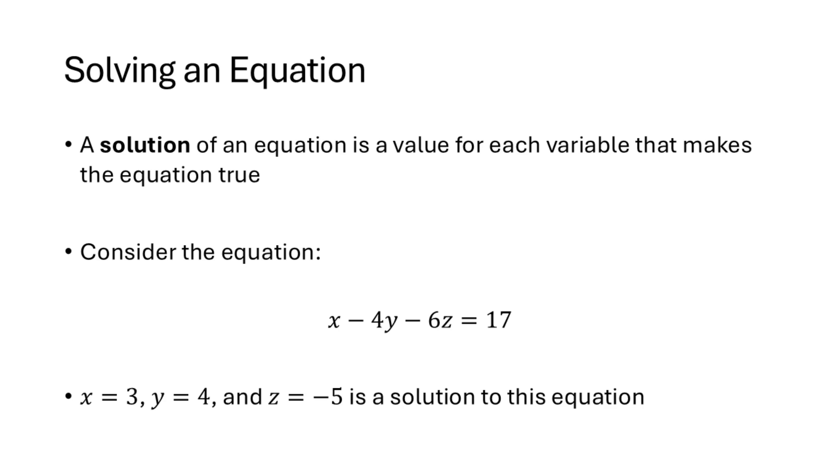Now that we've identified what a linear equation is, what we're going to be interested in are solutions of linear equations. A solution of an equation is a value for each of the variables in the equation that makes the equation true. For example, in the equation x minus 4y minus 6z equals 17, the values x equals 3, y equals 4, and z equals negative 5 form a solution to that equation. You can check that by plugging in 3 for x, 4 for y, and negative 5 for z. When we do that, we see that in fact 17 equals 17, so this is a solution.